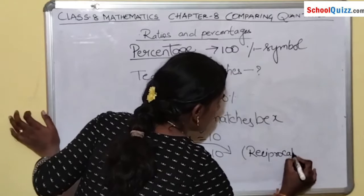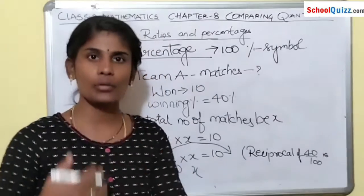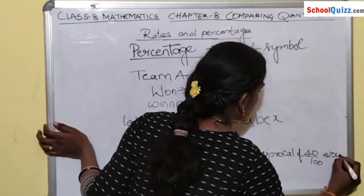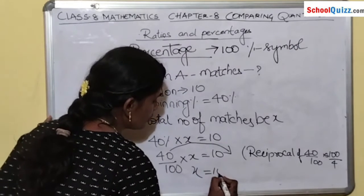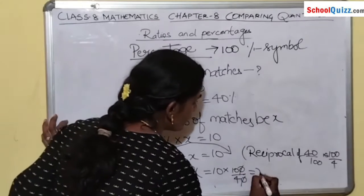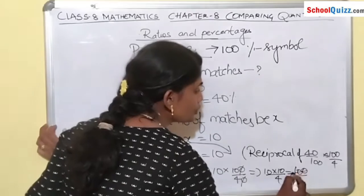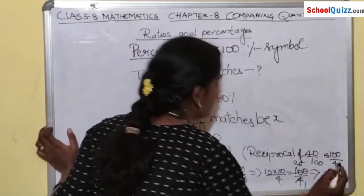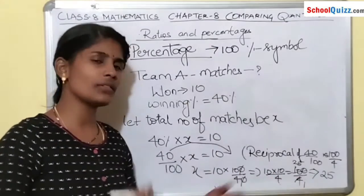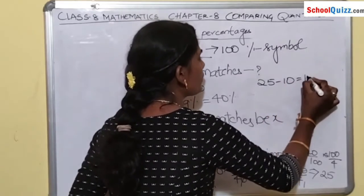The reciprocal of 40/100 is 100/40, because reciprocal means interchanging numerator and denominator. So X = 10 × (100/40). The zeros cancel: X = 10 × (10/4) = 100/4 = 25. So the team played a total of 25 matches, and they won 10 of those. Using this total we can also find how many matches the team did not win, just by subtracting: 25 − 10 = 15 matches not won.